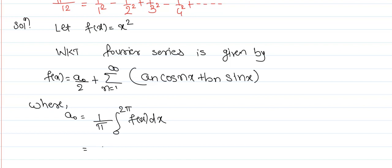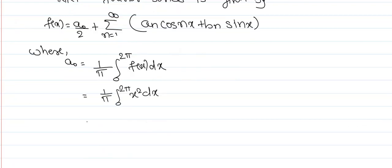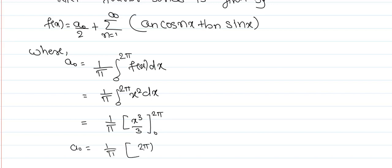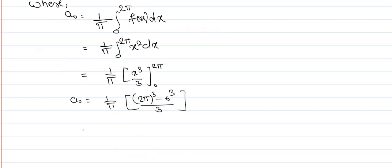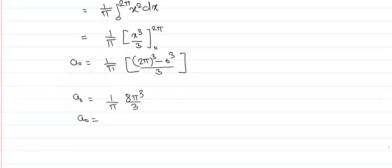Now the value of f(x) is x². So a₀ = (1/π) ∫₀²π x² dx. Integrating x² we get x³/3, with limit 0 to 2π. Therefore a₀ = (1/π) × (2π)³/3 = (1/π) × 8π³/3. After simplifying, a₀ = 8π²/3.